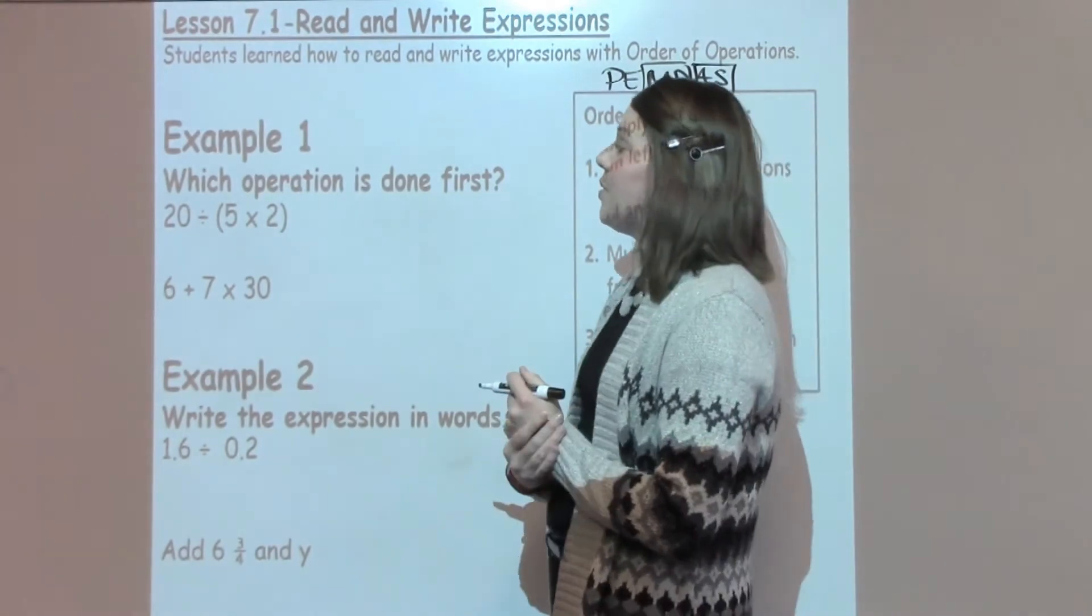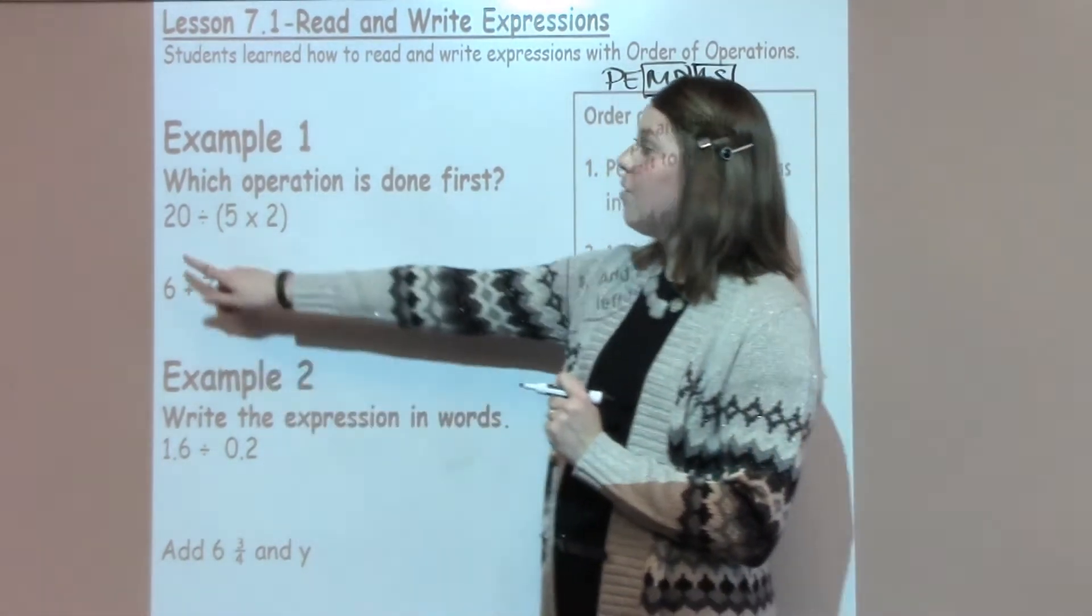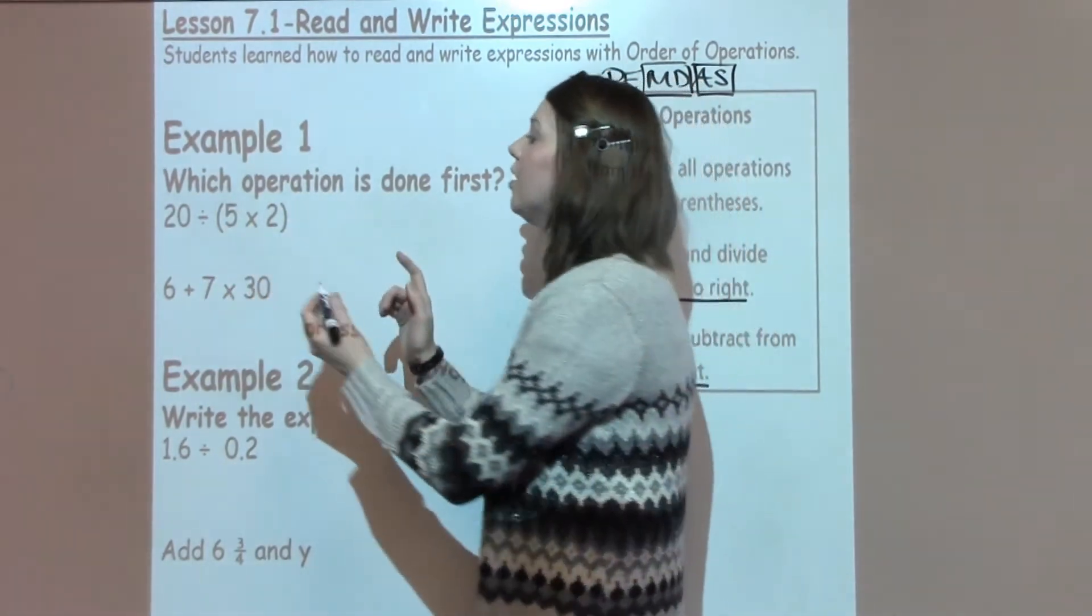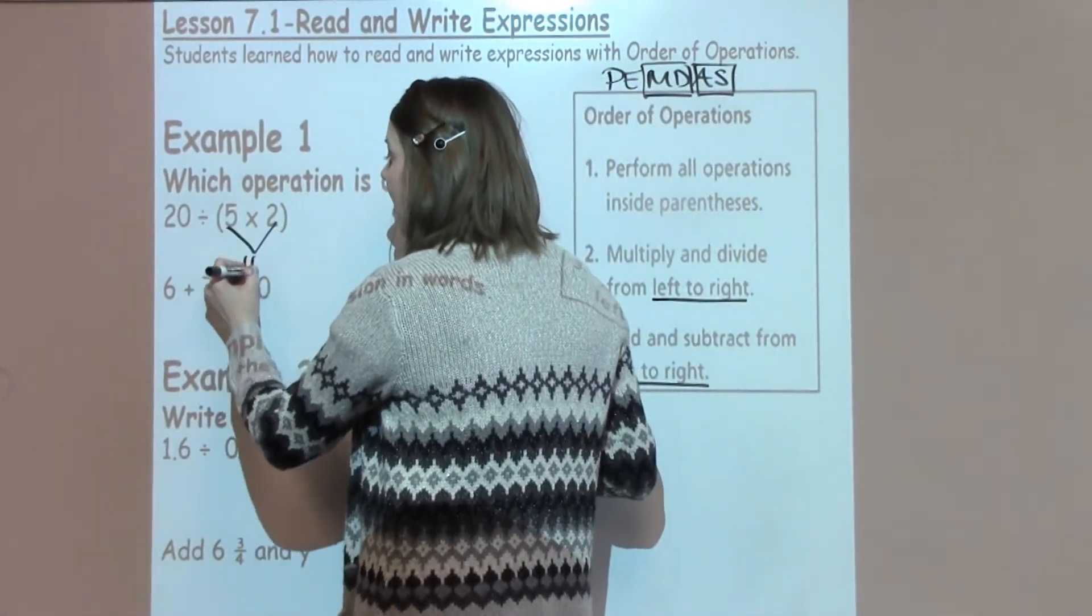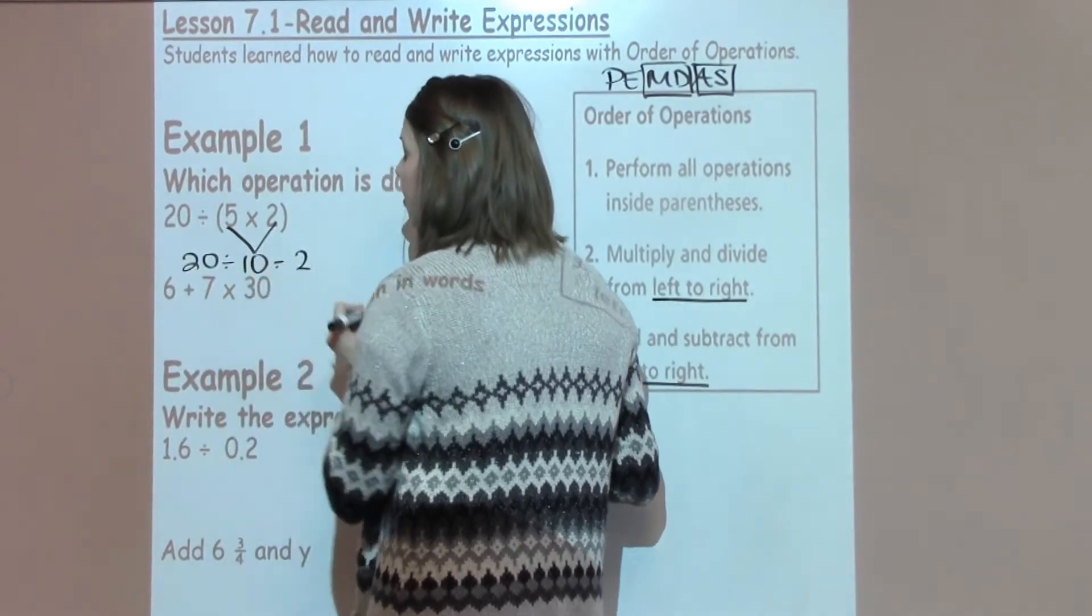Which operation should be done first? In this case, we need to look at what we have. We've got 20 divided by 5 times 2. We know 5 times 2 is 10, and 20 divided by 10 is going to give me an answer of 2.